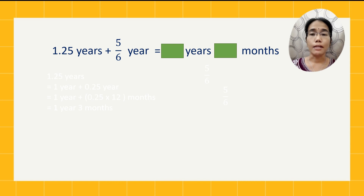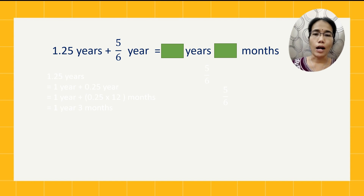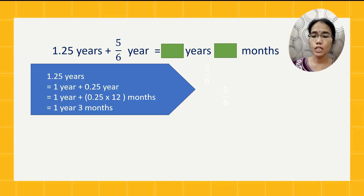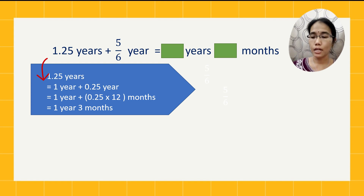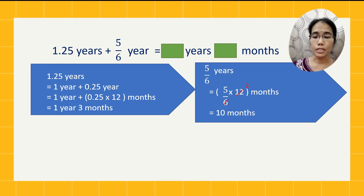Next example: 1.25 years plus five-sixths year, and your answer must be in years and months. Convert 1.25 years to years and months — once you convert, you'll get one year three months. Then convert five-sixths years to months: multiply by 12 and you'll get 10 months.